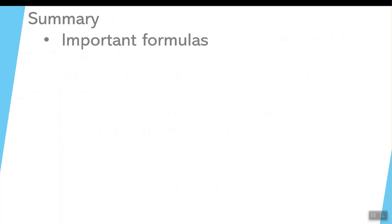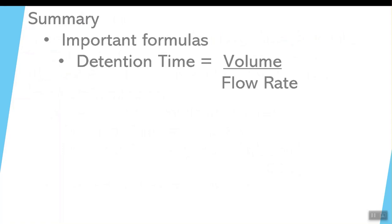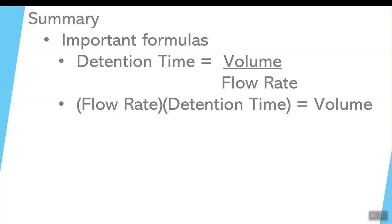Summary. When we're looking at these, the important formulas for this section is detention time equals volume over flow rate. Now if you flip that around, then flow rate, bring it to the other side of the equal sign. Instead of dividing, it now becomes multiplying. Flow rate times detention time equals volume.